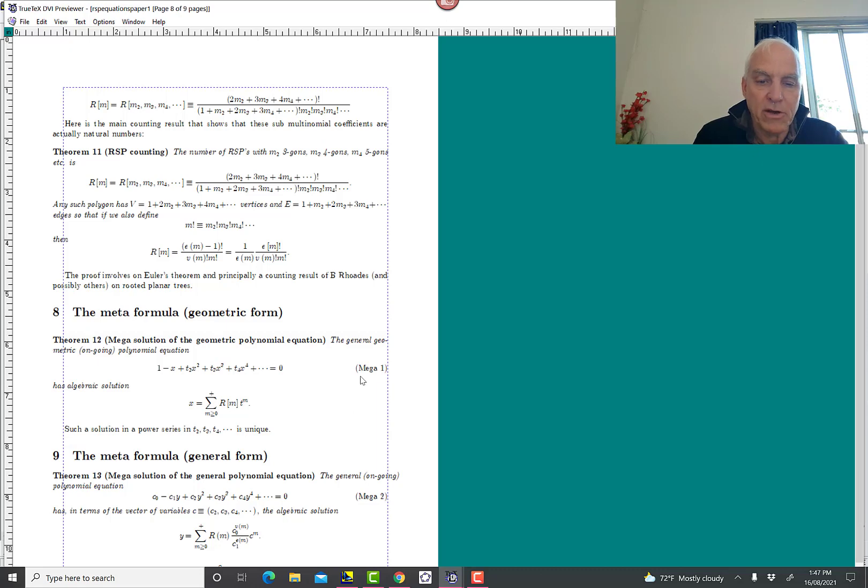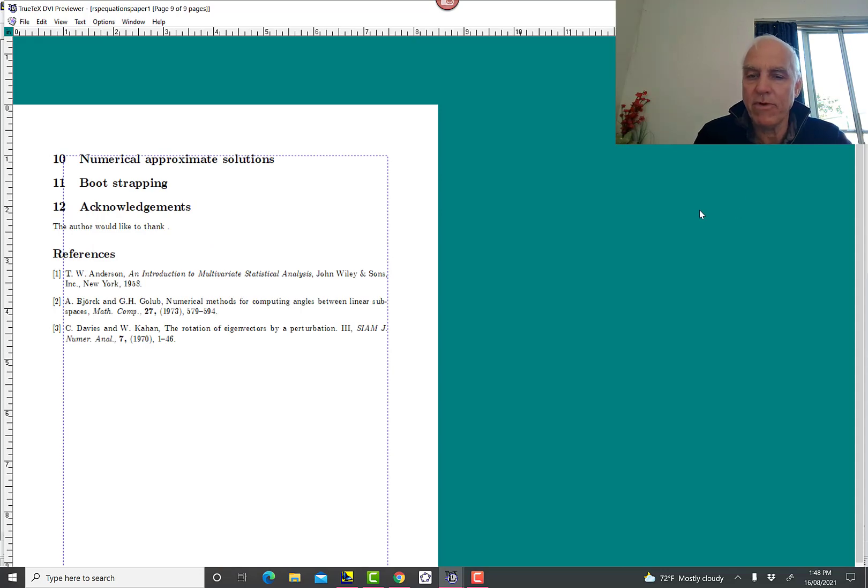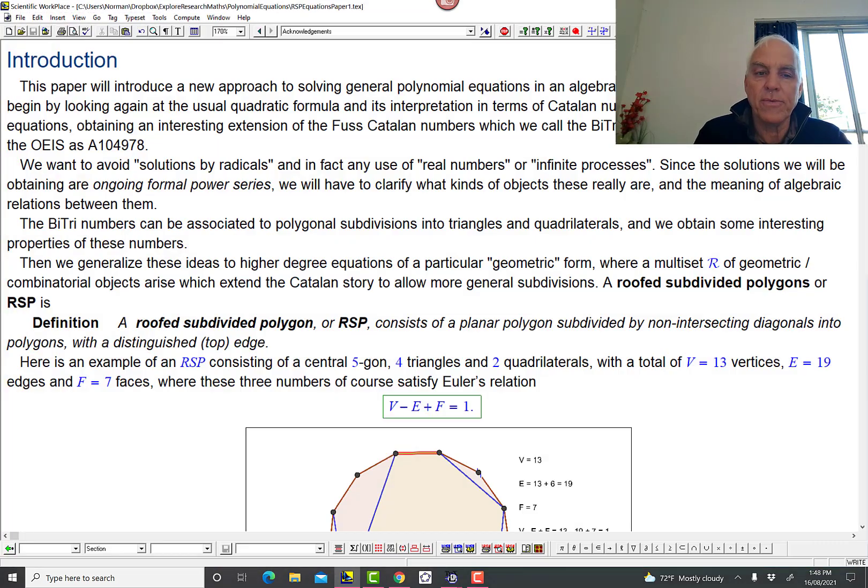And then the meta formula. Or mega. I'm calling it meta here and mega there. I'll have to decide which. So there's the geometric form. And then here is the general form. And then we have some other stuff. And these are not relevant. So I've gotten this by basically just taking an existing paper and using that framework. Because that has the dimensions and such laid out that's convenient for me. So I will eventually, of course, replace these with better references. So that's great.